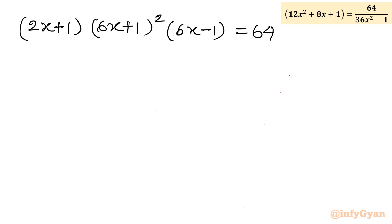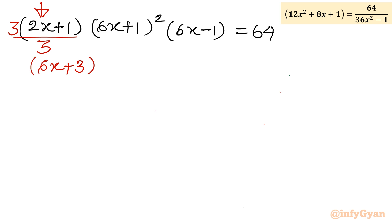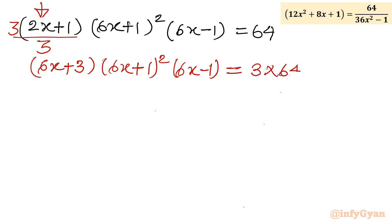Notice that 6x appears in two brackets but not in the (2x + 1) bracket. So I multiply (2x + 1) by 3 and divide by 3, making it (6x + 3). The right-hand side becomes 3 × 64 = 192. The equation is now: (6x + 3)(6x + 1)²(6x − 1) = 192.